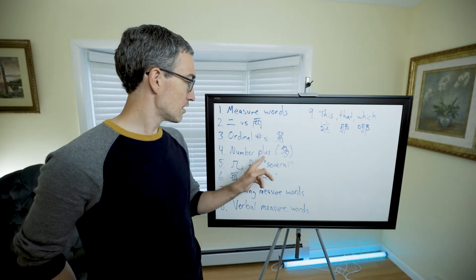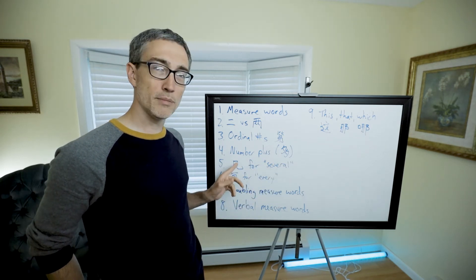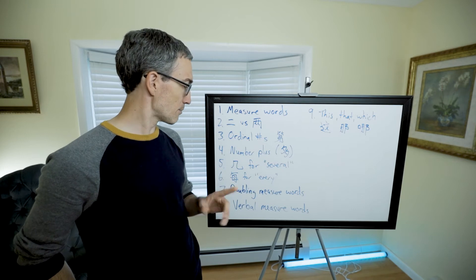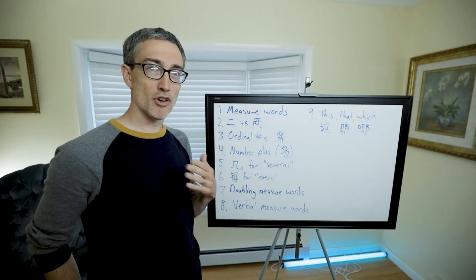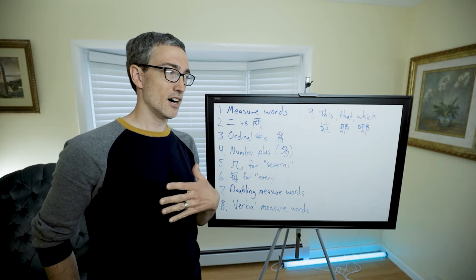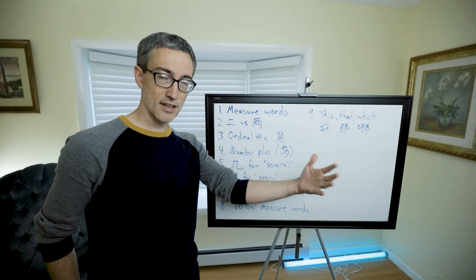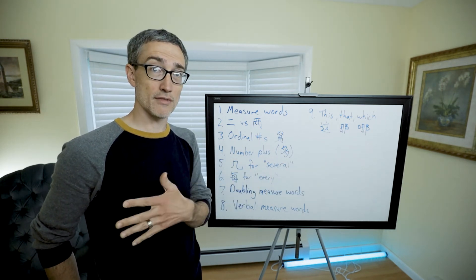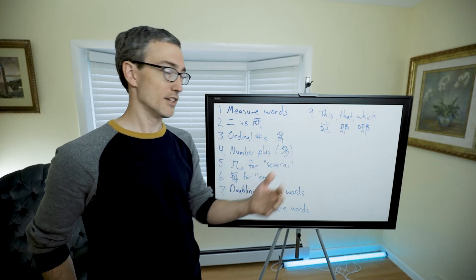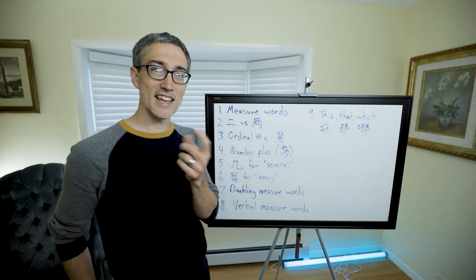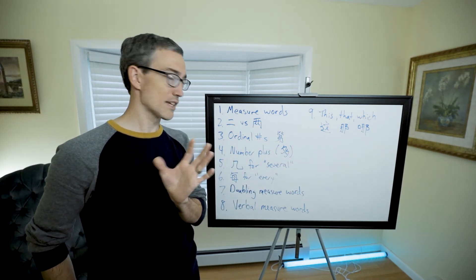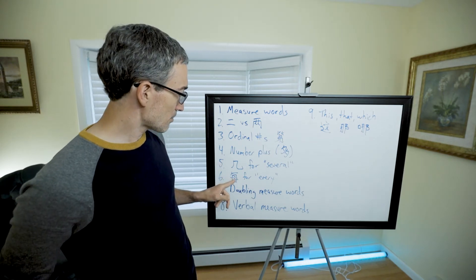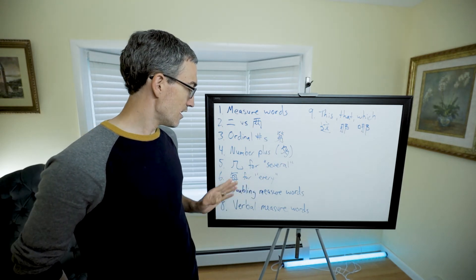Then we talked about 几 (jǐ) to mean several. 几 (jǐ) is a question word meaning how many, expecting a small number. But as a statement, it can be thrown in there to mean several of a certain thing, or even several hundred or several thousand or several whatever comes after it. It stands in there for a number, most likely between one and nine.